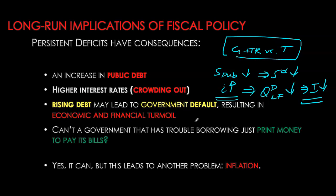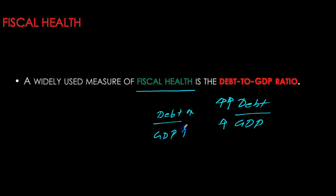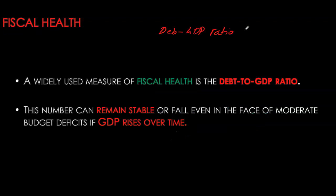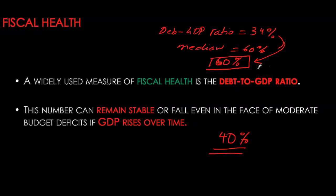High inflation rates are something governments and policymakers try to avoid at all costs. A widely used measure of fiscal health, also used by the IMF, is the debt-to-GDP ratio — simply the overall public debt divided by GDP. A higher debt-to-GDP ratio means lower fiscal health. However, if accumulation of debt is outpaced by growth in GDP, current deficits can be sustainable long-run. Canada's current debt-to-GDP ratio is approximately 34%. The median for all countries is approximately 60%, and the IMF estimates a prudential limit of 60% for developed economies, while recommending developing or emerging economies not exceed 40%. Canada's ratio is still well below the IMF limits.